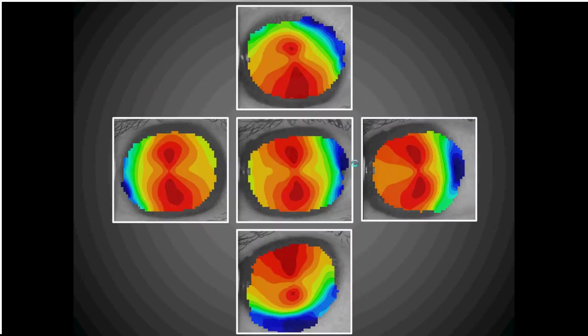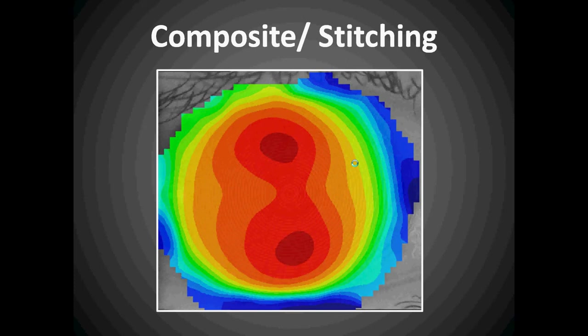When coupled with the new composite feature available from the Medmont topographer, you are able to map 100% of the eye surface by changing the fixation of the patient and taking captures on each area of the cornea. When stitched together to create the Medmont composite eye, we can understand 100% of the corneal surface and therefore predict the angle that forms at the 10 millimeter cord more accurately.